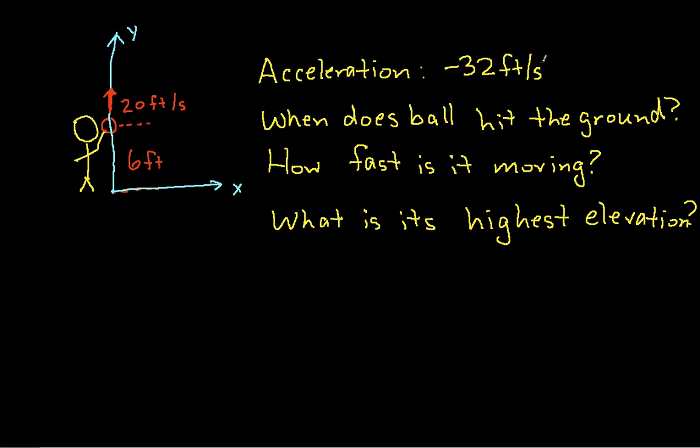is 32 feet per second downwards, or I'm sorry, this should be 32 feet per second squared downwards. And the question is when does the ball hit the ground, how fast is it moving when it hits the ground, and what's its highest elevation, how high does it actually get?